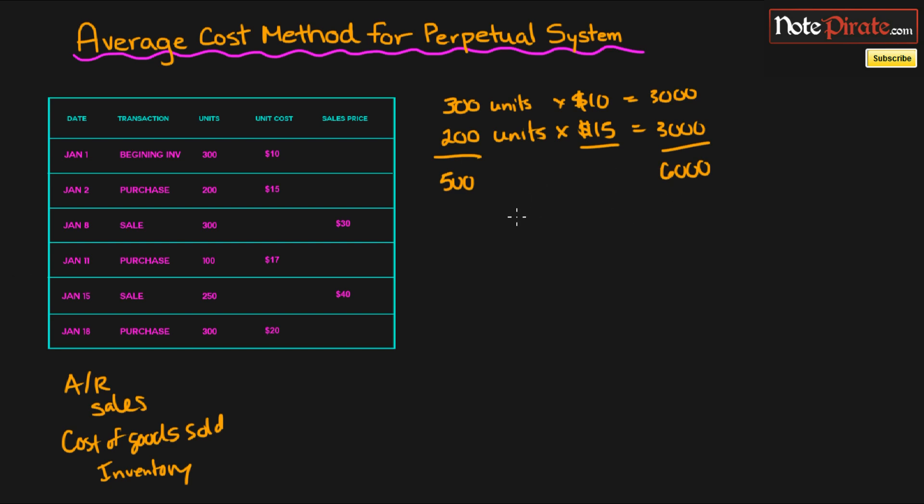And that's going to be $12 a unit. So right now, our $6,000 divided by 500 units is going to be $12 a unit. So that's what our average cost right now per unit is. So now we have our sales entry right here for 300 units. So we can perform our cost of goods sold for that amount. So 300 units multiplied by $12 a unit is going to be $3,600, which is our cost of goods sold for that entry.